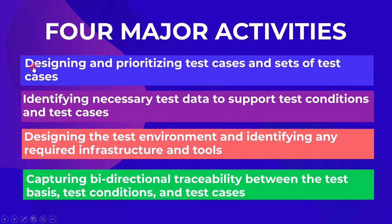The first activity is designing and prioritizing test cases and sets of test cases. The second activity is identifying necessary test data to support test conditions and test cases. The third activity is designing the test environment and identifying any required infrastructure and tools. The fourth activity is capturing bidirectional traceability between the test basis, test conditions, and test cases. Now let's understand each of these activities one by one.